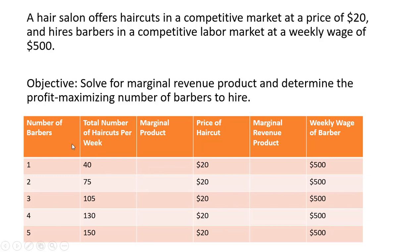Here's the table that we're going to eventually want to fill in. Here are the number of barbers this hair salon could hire, and here we have the total number of haircuts per week with hiring one barber, two barbers, and so on. We're going to solve for marginal product. The price of the haircut is given at $20. We're going to solve for marginal revenue product, and the weekly wage is $500 for each barber hired.